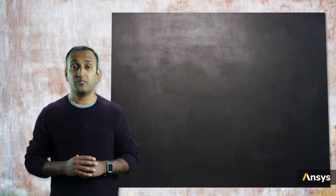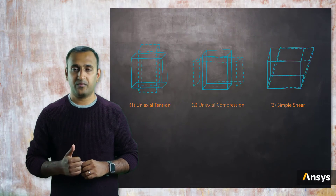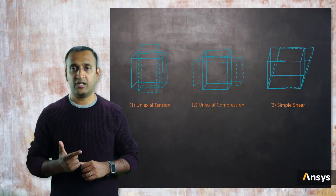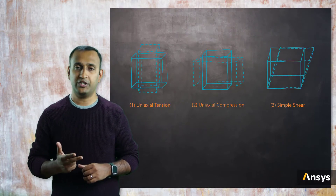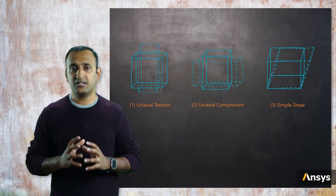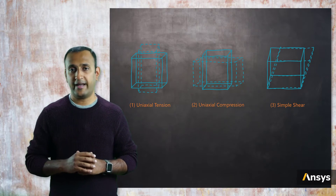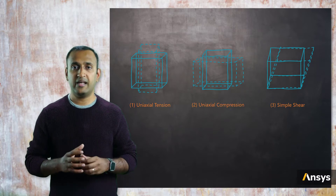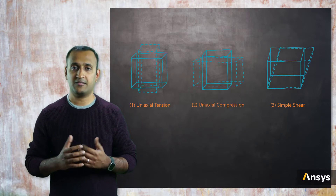So the material must be tested to measure the response in the three independent modes of deformation, which are uniaxial tension, uniaxial compression, and simple shear. These three modes are required to accurately characterize the deviatoric material behavior of hyperelastic materials.